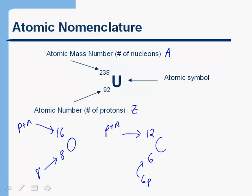And obviously if you wanted to just figure out the number of neutrons, you would take the atomic mass number and subtract the atomic number. So for example, up here for uranium, uranium has 238 protons plus neutrons. It has 92 protons. So the number of neutrons in uranium would be 146.